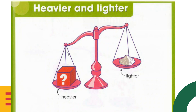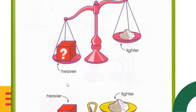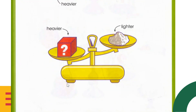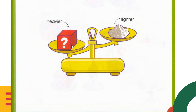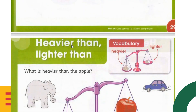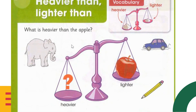Over here is a weighing scale. On one plate we put the lighter thing, and on the other plate is the heavier thing. We need to know which thing is heavier and which is lighter. For example, over here this box is going downward, so of course it's heavier, and this side is lighter.